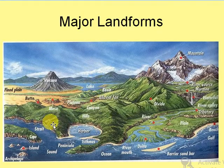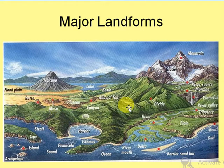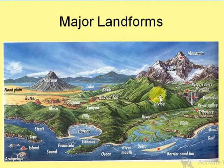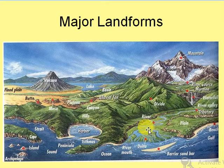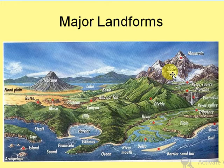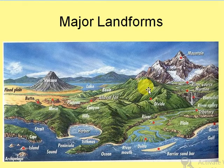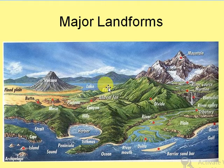Look at the picture carefully. You must have seen some of the land features as shown — the mountains, volcano, lakes, harbour, islands — these are some very common features which you might have come across. Have you ever thought how these beautiful landscapes or landforms have been formed? The formation of landforms is a continuous process, although it takes millions of years to change particular landforms.